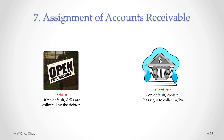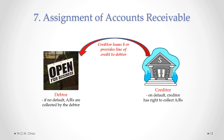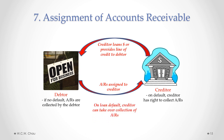Businesses that sell to customers on credit generate accounts receivables, which are considered assets that have value and can be used as collateral for loans or lines of credit. The security interest involving accounts receivable is called an assignment of accounts receivable. A creditor — usually a bank or financing company — provides a loan or line of credit secured by having the debtor's accounts receivables assigned over to it. As long as there is no default, the debtor continues to collect its ARs in the usual course of business. If there is a default, the creditor takes over collection of the ARs.